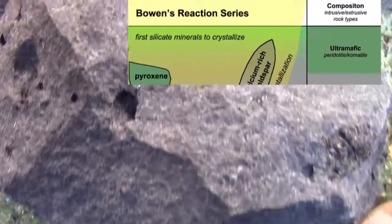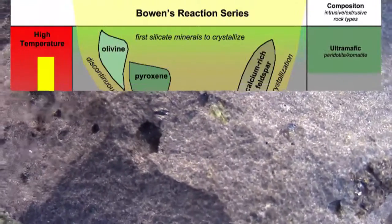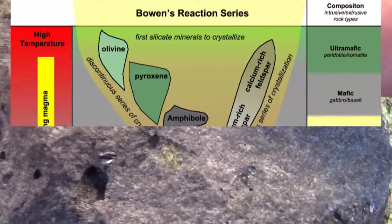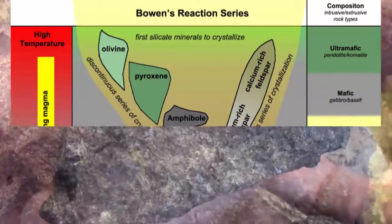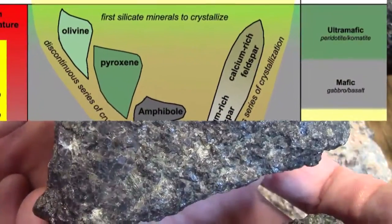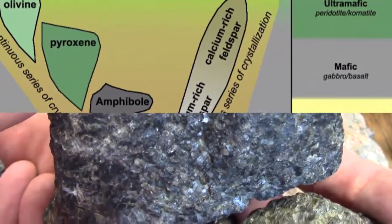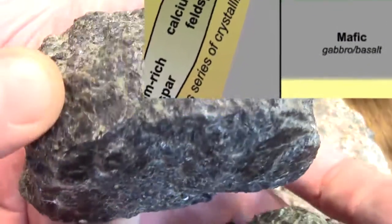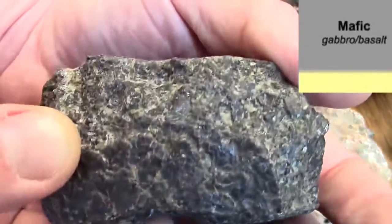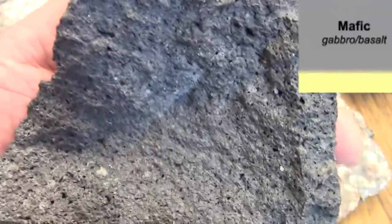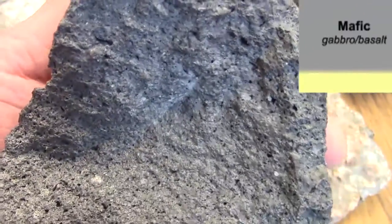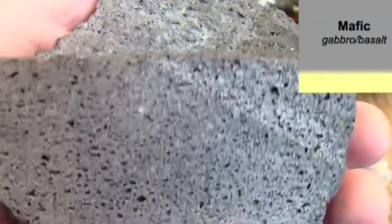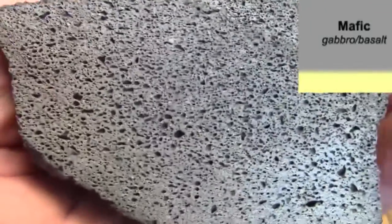As we move down Bowen's reaction series to the mafic chemistry, we add pyroxene and amphibole to the mix. When phaneritic, we call it gabbro, and when aphanitic, it is basalt. These rocks tend to be black to black-green in color.